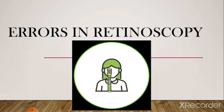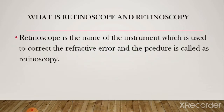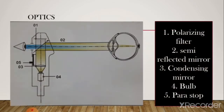Before starting this presentation, we need to know what is a retinoscope and what is retinoscopy. The retinoscope is the name of the instrument, and retinoscopy is the procedure by which, using the retinoscope, we find out the refractive error of the eye and correct it with trial lenses.